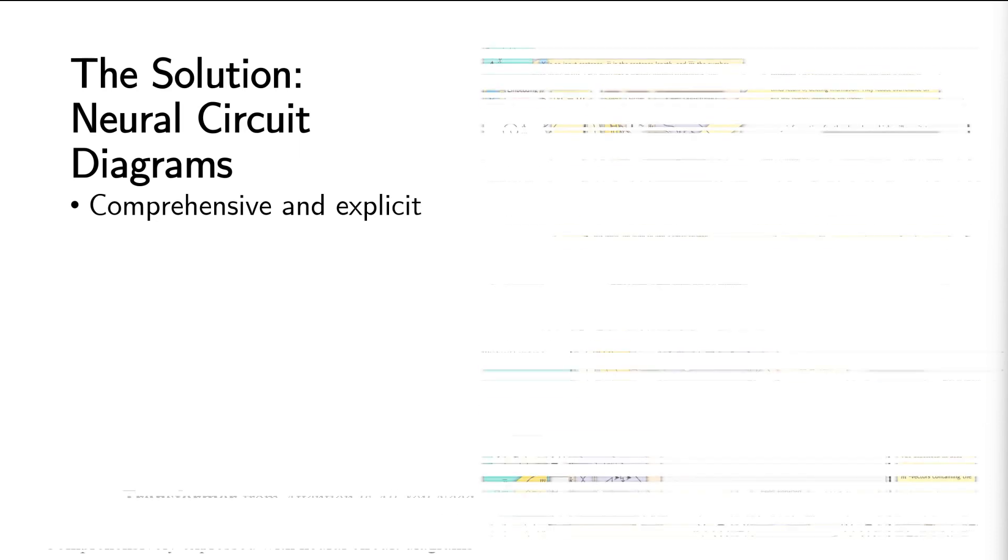This is where neural circuit diagrams come in. Neural circuit diagrams can express deep learning architectures comprehensively and explicitly. They can show entire architectures in high detail, can be reliably annotated, deciphered, and understood.